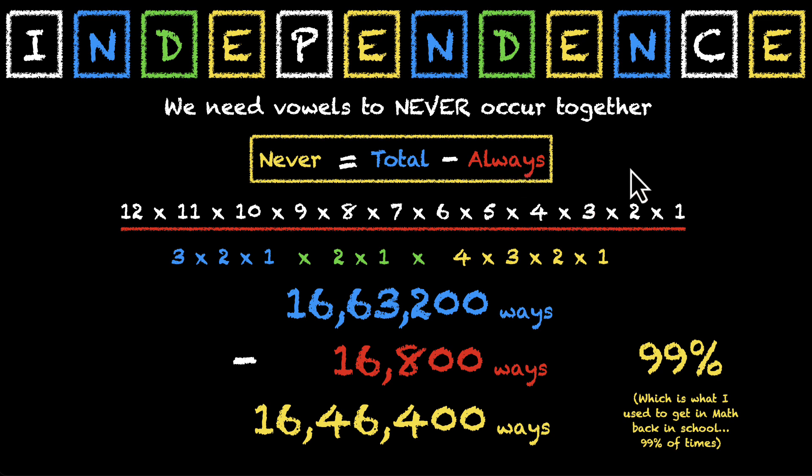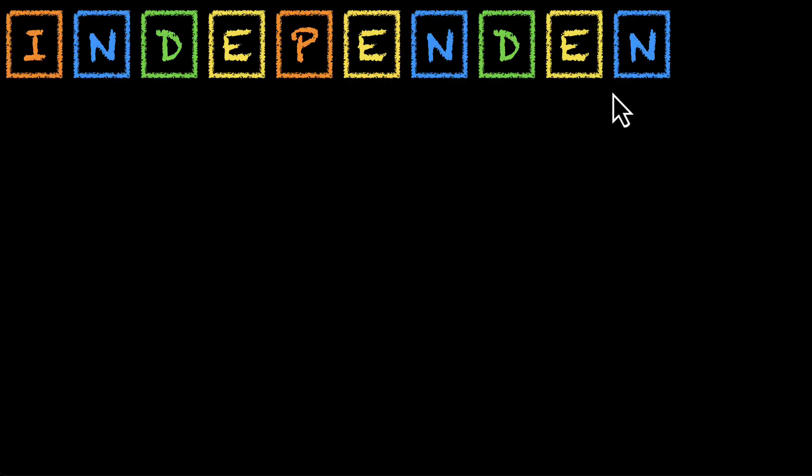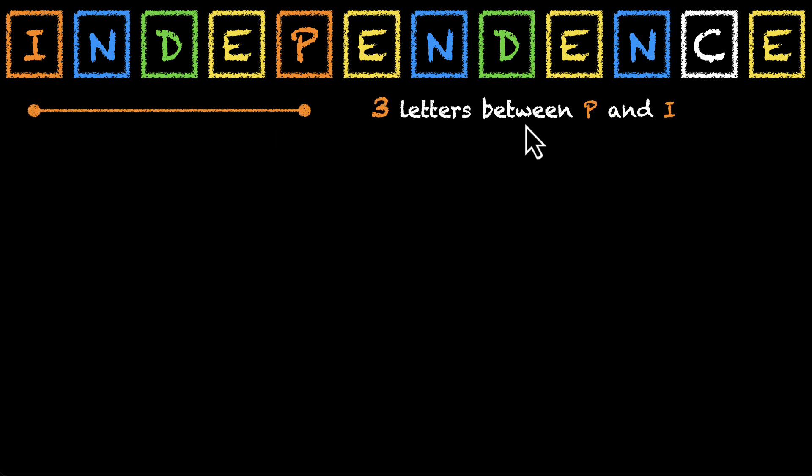And now let's tackle the real kicker, the challenge problem. Here's what we have. We have I, N, D, E, P, E, N, D, E, N, C, E. And we need to make sure that I and P have 3 letters between them. Let's take a look at a few examples.